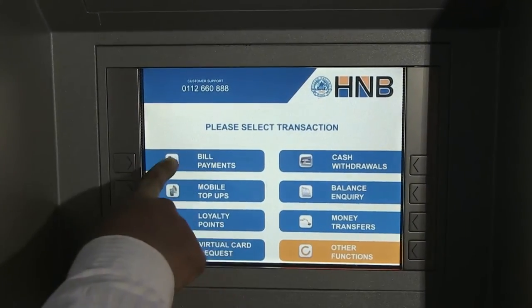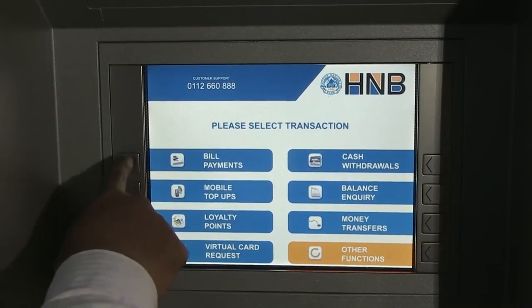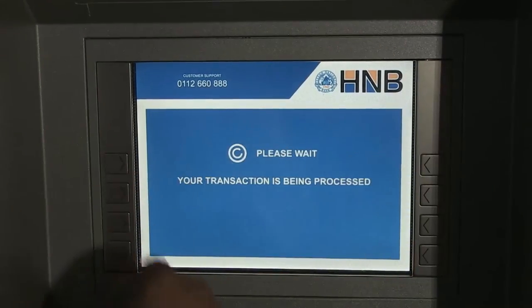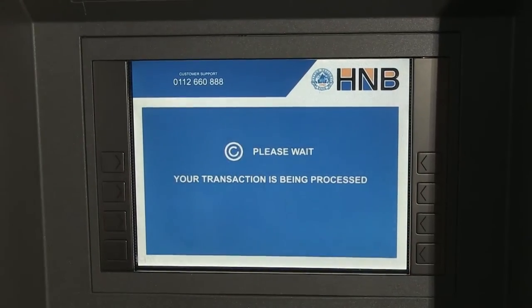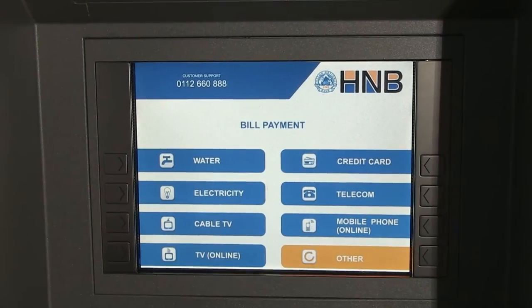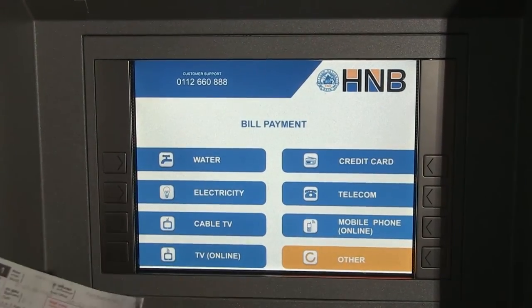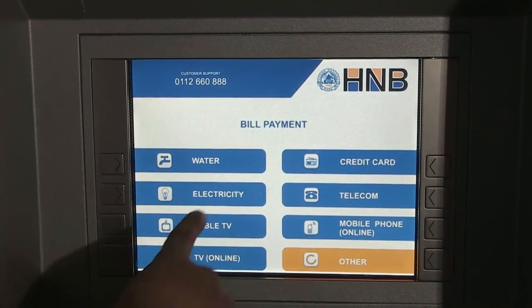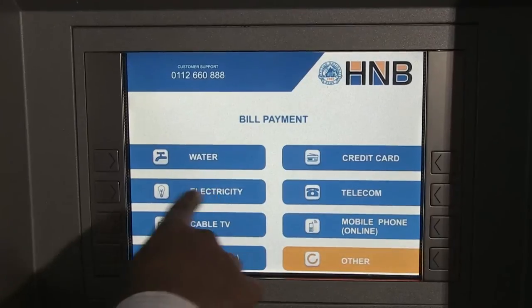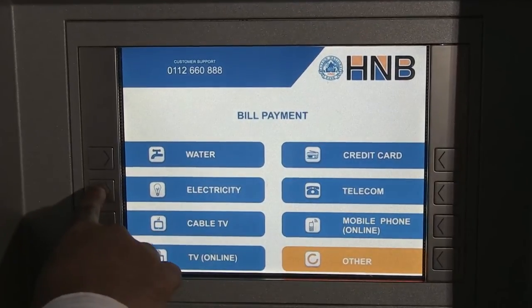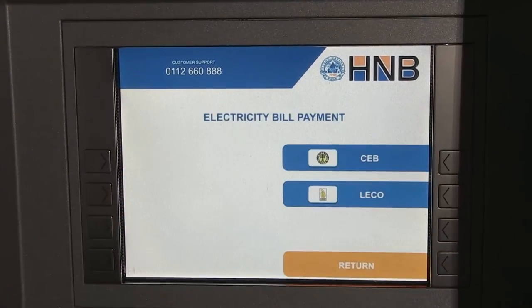So I go to the bill payments option. I'm going to make an electricity board payment, so I select electricity.